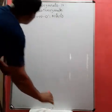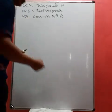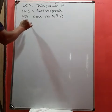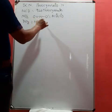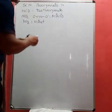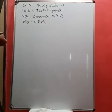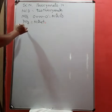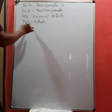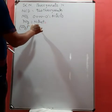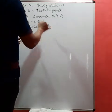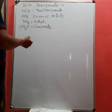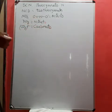Nitrito attaches through O, so you write O first. For NO3, which is an anion, it is called nitrato — take nitrate, remove 'e', and add 'o' to get nitrato. Similarly, CO3 two-minus anion is written as carbonate, but as a ligand it becomes carbonato — remove 'e', add 'o'.